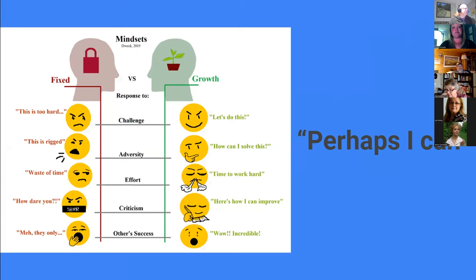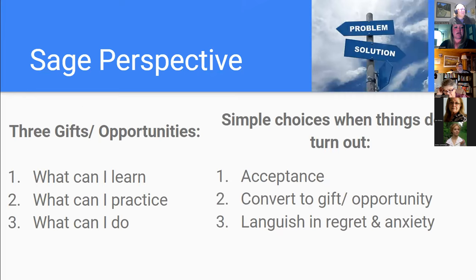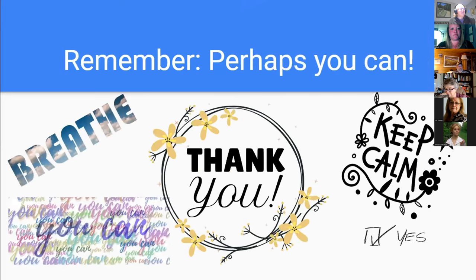I found a graphic showing the fixed versus growth mindset — the fixed side saying 'this is too hard' for a challenge, and the growth mindset saying 'let's do it even though it's hard.' Then I went through the Sage Powers — a quick display of what those are, how we could use those gifts or opportunities and simple choices when we have a problem and need to come up with a solution. And then a little thank you at the end: stay calm, breathe, you can do this — and perhaps you can.